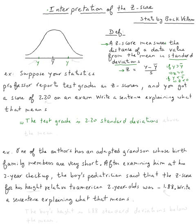is it above the mean or below the mean? Since it's positive, two point twenty is positive, we say above the mean. If it was negative, we would say below the mean.